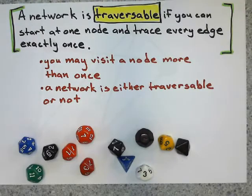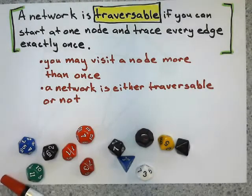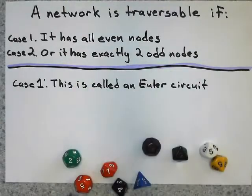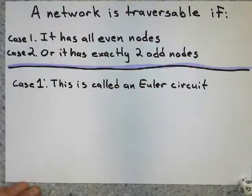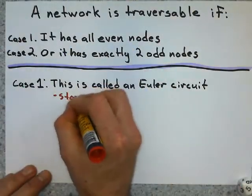So a network is traversable if you can start at one node and trace every edge exactly once. You can visit a node more than once. And it's traversable if it has all even nodes or if it has exactly two odd nodes.